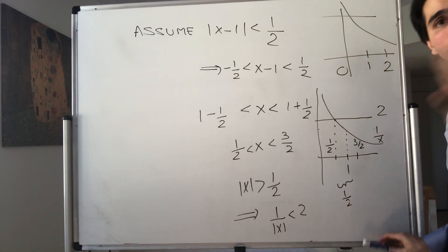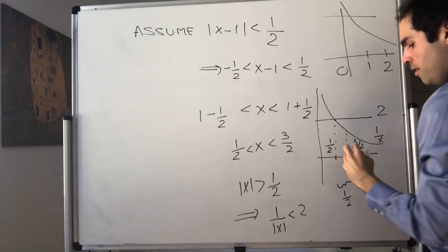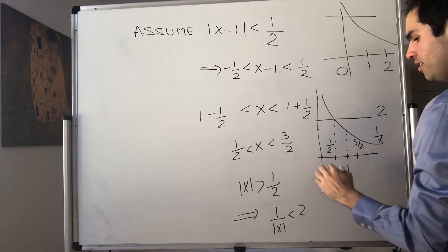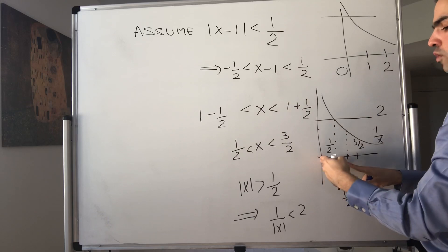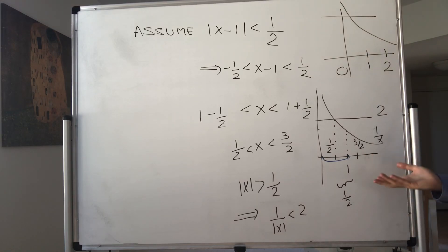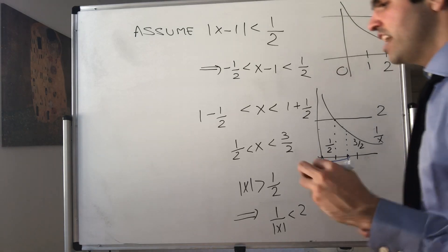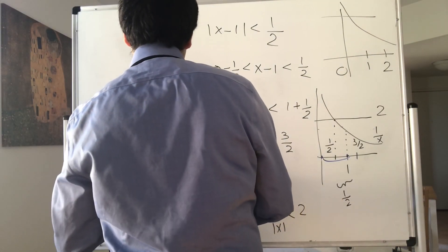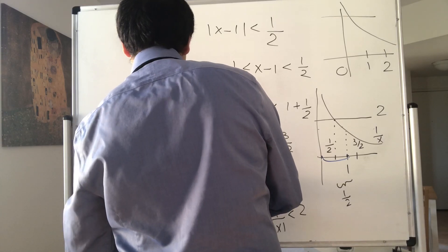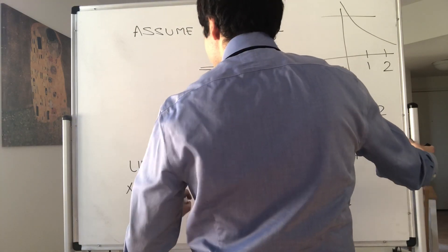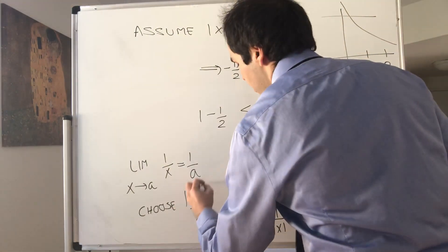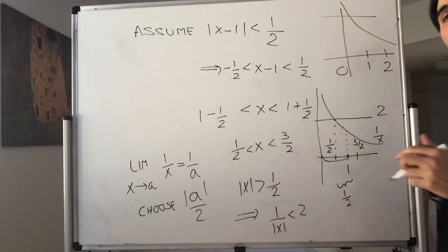A quick word about the choice of 1/2: basically, any number strictly between 0 and 1 would have worked. Choosing 1 didn't work because x could approach 0. For a general strategy — if you want to prove that the limit as x goes to a of 1/x is 1/a — choose |a|/2, to handle the case where a could be negative. That's the reliable approach.